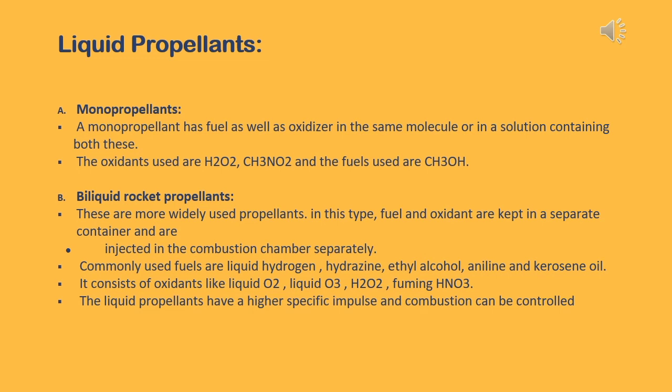A monopropellant has fuel as well as oxidizer in the same molecule or in a solution containing both. The oxidants used include hydrogen peroxide and nitromethane, and the fuel used is methanol. Bi-liquid rocket propellants are more widely used. In this type, fuel and oxidant are kept in separate containers and injected into the combustion chamber separately. Commonly used fuels are liquid hydrogen, hydrazine, ethyl alcohol, aniline, and kerosene oil. Oxidants include liquid oxygen, liquid ozone, hydrogen peroxide, and fuming nitric acid. Liquid propellants have a higher specific impulse and combustion can be controlled.